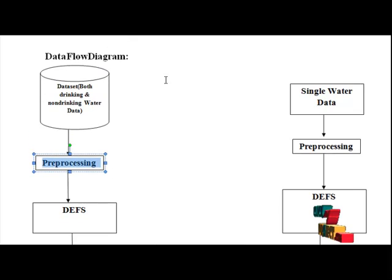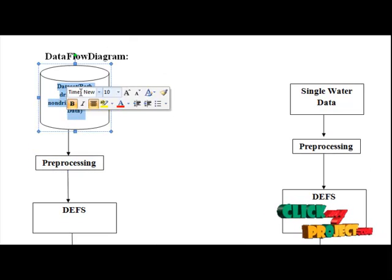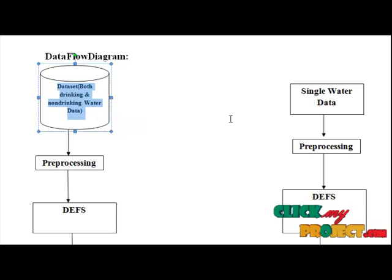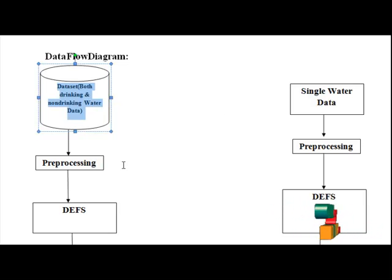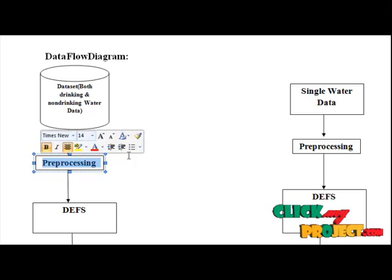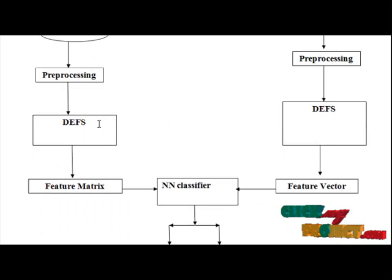Now let us have a view on the data program. First, we select the dataset which contains both drinking and non-drinking water data parameters like pH level, fluid, iron level, zinc level, and taste. The next step is preprocessing, where these parameters are arranged into matrix format. The next step is DEFS.